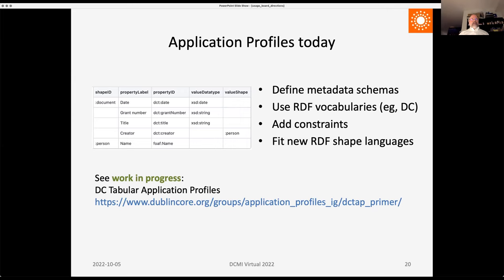One important work in progress is DC Tabular Application Profiles, led by Karen Coyle. Karen and John Huck are going to give a tutorial about DC tabular application profiles tomorrow. The tabular application profile is our attempt to make it easy for people to create application profiles in spreadsheets that can then be converted into machine-readable representations and into shape languages for use in validation. The DC TAP effort is also making a cookbook to help people make better profiles — it is about usage, but not currently within the scope of the usage board, which is something we'll discuss.